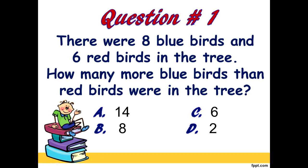Again, there were 8 bluebirds and 6 redbirds in the tree. How many more bluebirds than redbirds were in the tree? A, 14. B, 8. C, 6. D, 2. Ready? Go.